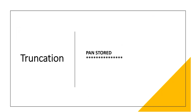Truncation is the method of rendering the full PAN — or sometimes a portion of it — unreadable anywhere it is being stored, for example in files, databases, and so on.